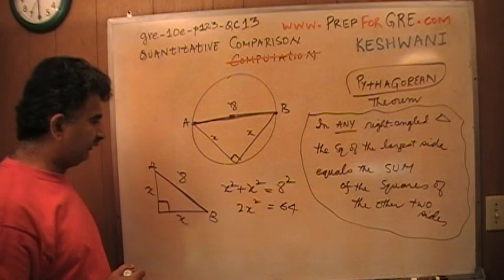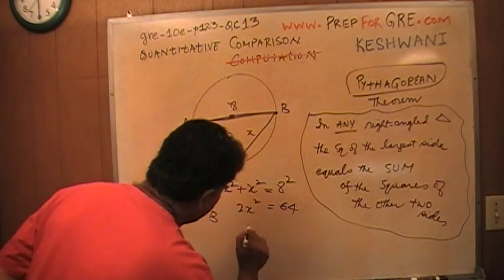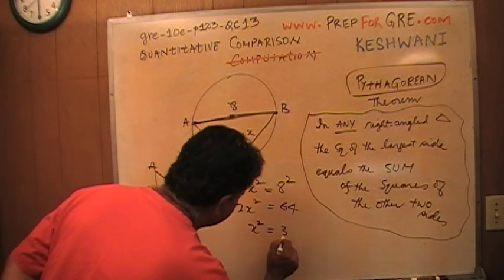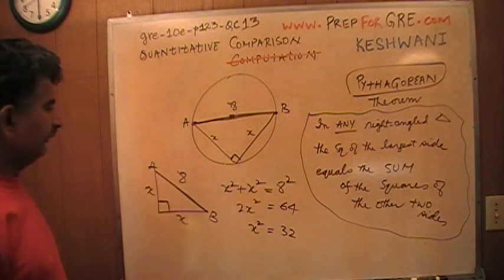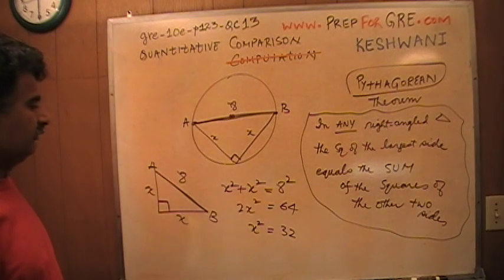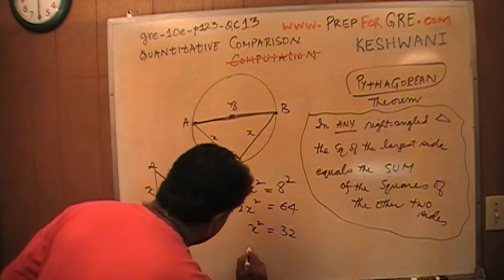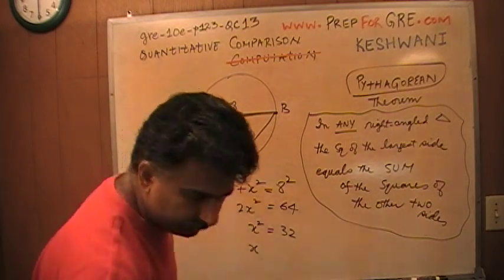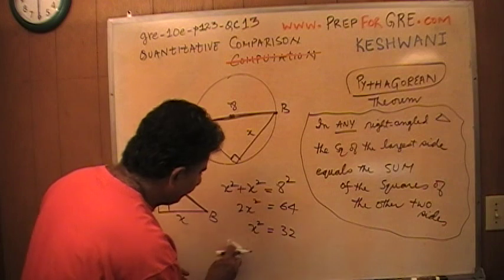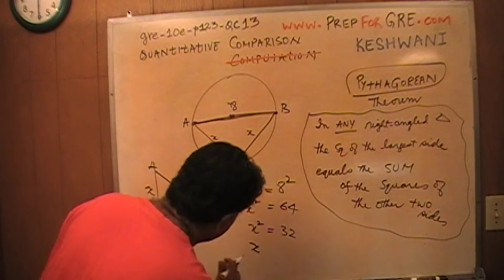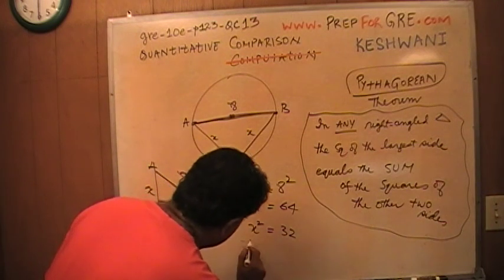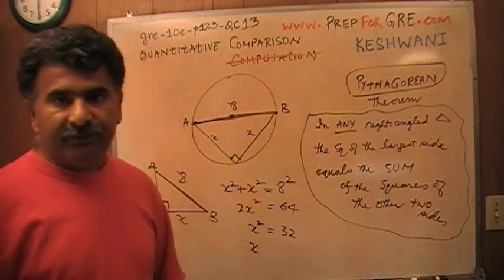If you square 8 it's 64, and if you divide both sides by 2, x² = 32. And what is that? What do you surmise from that? If x² = 32, then how much is x?